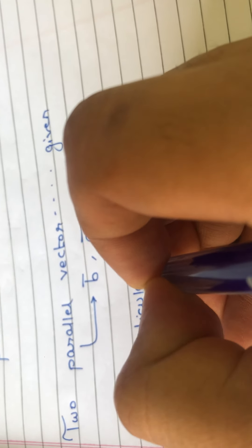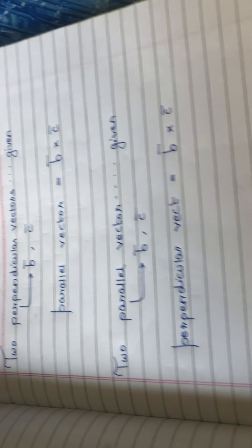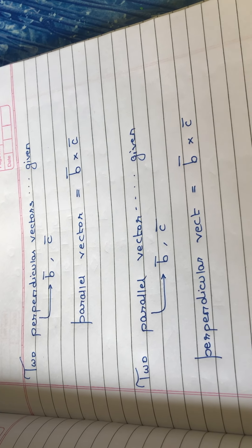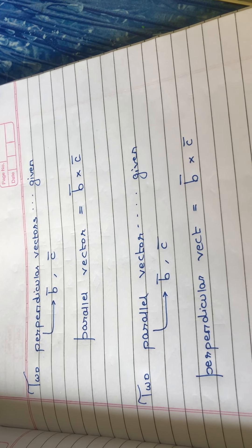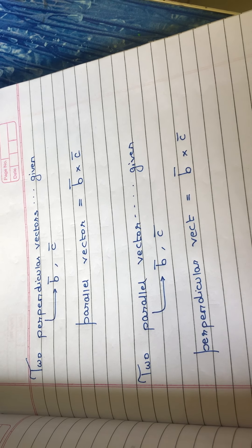Similarly, if two parallel vectors B̄ and C̄ are given in a plane question, and I need the perpendicular vector, again take their cross product. In simple terms: the cross product of two perpendicular vectors gives the required parallel vector, and the cross product of two parallel vectors gives the required perpendicular vector.